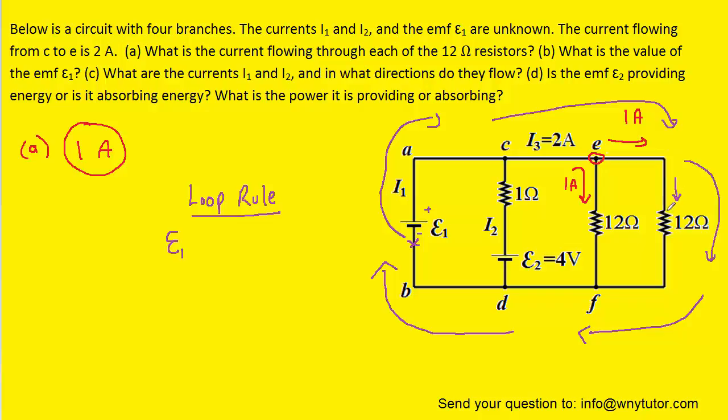We know that the voltage change across a resistor is given by the amount of current times the resistance. Since we are moving with the current, that will represent a negative potential change. Following this equation, we multiply the current, which we determined to be 1 amp, times the resistance of 12 ohms.